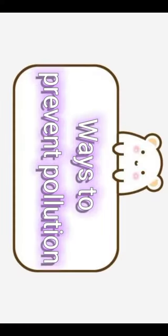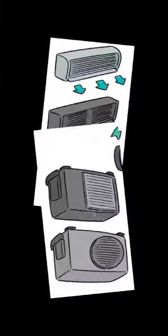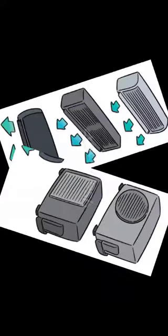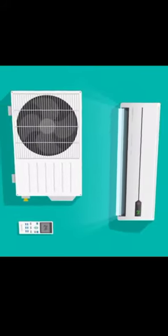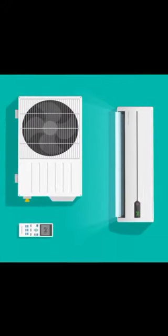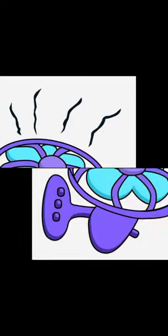Ways to prevent pollution. Use fans instead of air conditioners. The usage of air conditioners takes a lot of energy and emits a lot of heat, which is bad for the environment. Air conditioners also take a lot of power and energy to work as compared to fans.